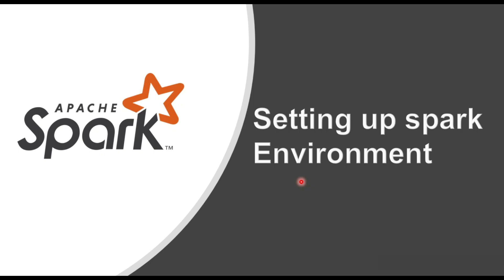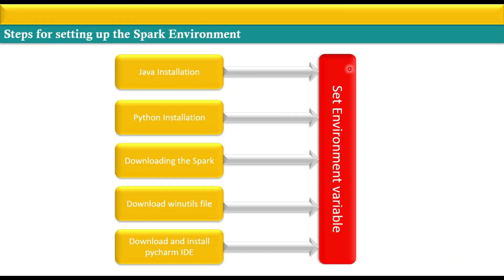Hello champions, welcome back. We are continuing our journey on how to set up the Spark environment for Windows. In previous sessions we completed Java installation with its environment variable and Python installation with its environment variable. Today we are going to focus on downloading Spark and setting up its environment variable — that is step three — and also downloading the WinUtils files and setting up their environment variable.